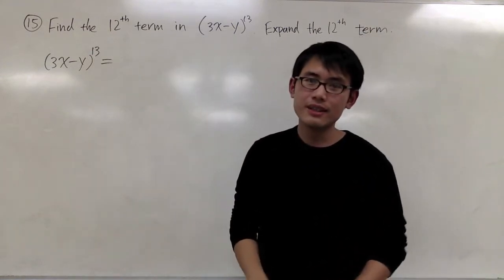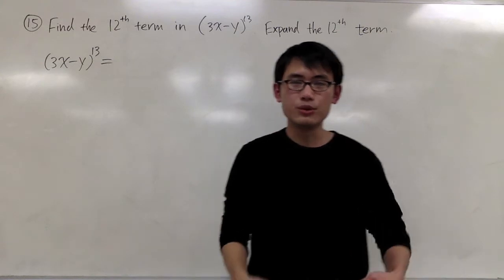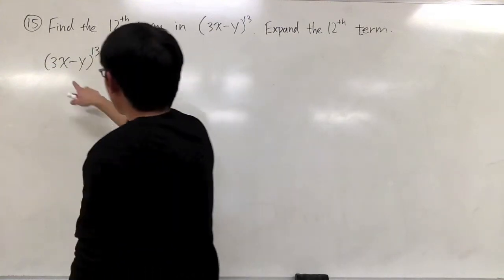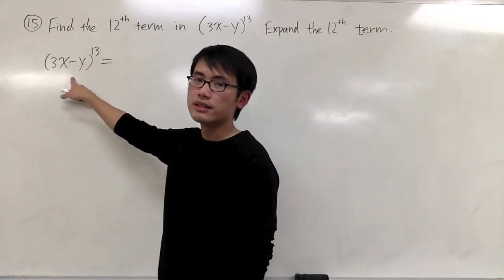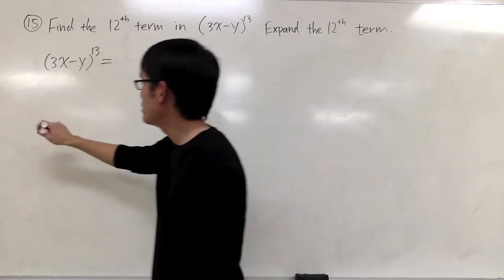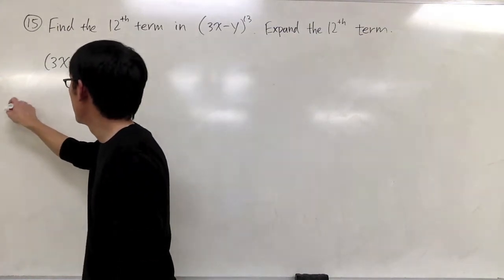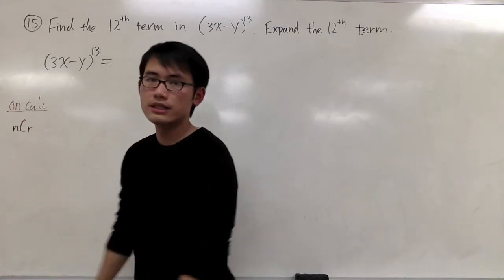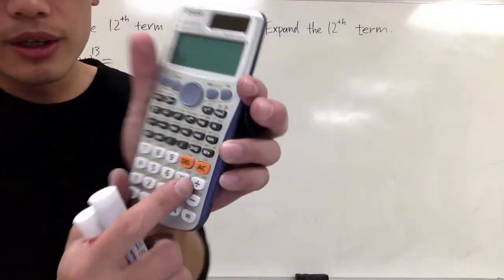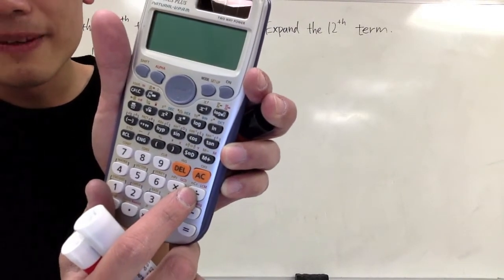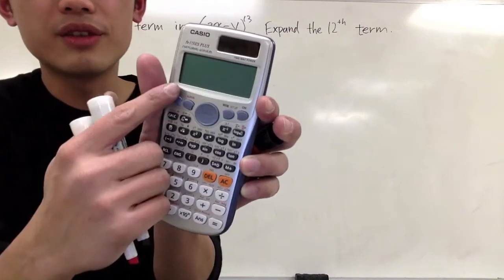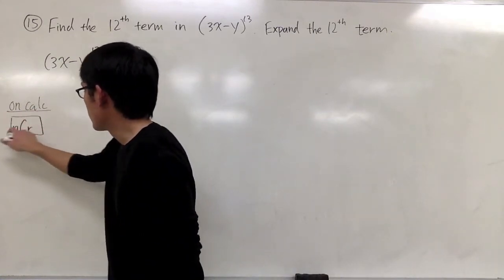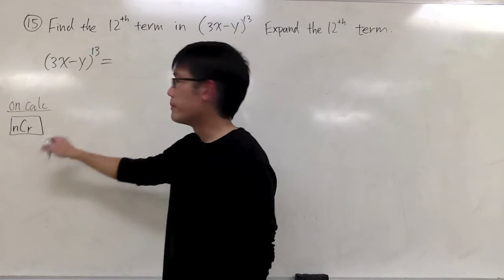You should have your calculator — if you have one, it is extremely useful. This is the calculator I recommend. One thing you will need is what we call the NCR button on the calculator. You should look for that key. On my calculator, it's in orange, so I have to hit Second and that button to access NCR.